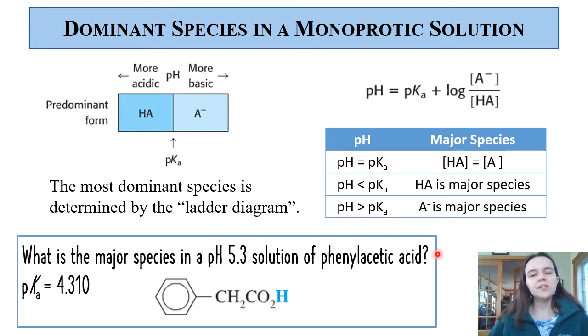We can use the example of phenylacetic acid, which is monoprotic, has one pKa value of 4.31. If we ask ourselves what the major species is at pH 5.3, then we should be able to say, is this pH greater than or less than the pKa?